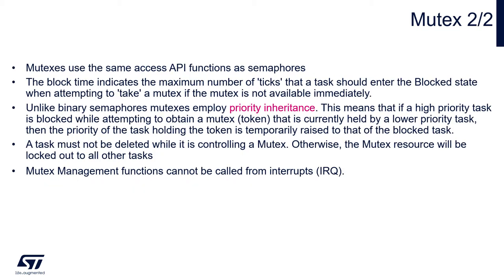Mutexes use the same access API functions as semaphores. The block time indicates the maximum number of ticks that a task should enter the blocked state when attempting to take the mutex, if the mutex is not available immediately. Unlike binary semaphores, mutexes employ priority inheritance. This means that if a higher priority task is blocked while attempting to obtain the mutex token currently held by a lower priority task, the priority of the task holding the token is temporarily raised to that of the blocked task. This is managed by the scheduler.